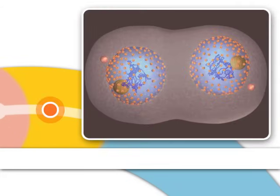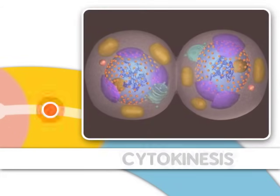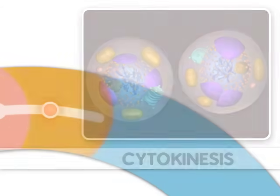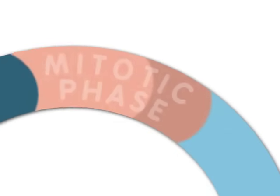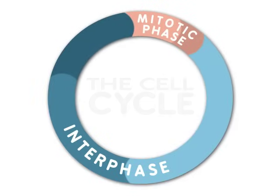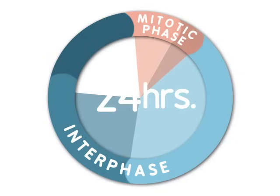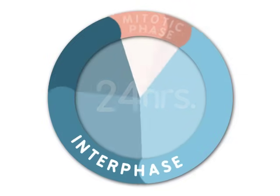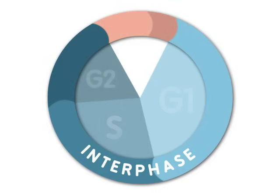After mitosis, two new cells are formed by a process called cytokinesis. Mitosis is only one part of what is called the cell cycle. For many eukaryotic cells, a cell is duplicated every 24 hours. Most of the life of a cell is spent in interphase, which consists of three stages called G1, S, and G2.